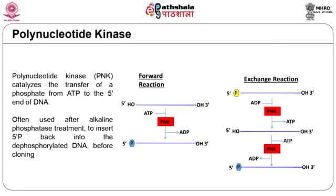In the exchange reaction, target DNA or RNA that has a 5' phosphate is incubated with an excess of ADP. Polynucleotide kinase will first transfer the phosphate from the nucleic acid onto an ADP, forming ATP and leaving a dephosphorylated target. Polynucleotide kinase will then perform a forward reaction and transfer a phosphate from ATP onto the target nucleic acid.